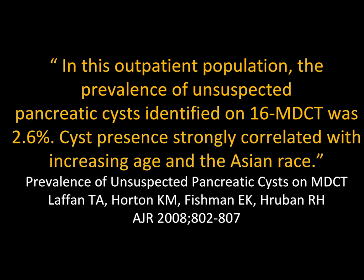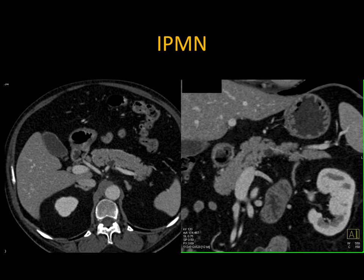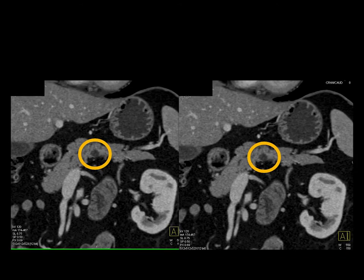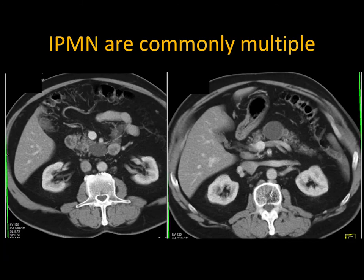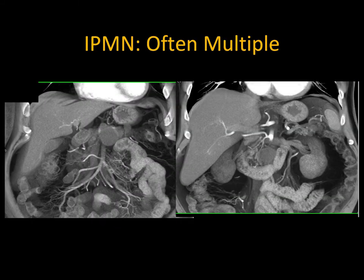Here's a typical lesion — body of the pancreas, 1cm, water density, IPMN. On the coronal view: no dilated pancreatic duct, no septations, no nodularity — typically going to be a benign lesion. A larger one in the body in a 40-year-old female could suggest a mucinous cystic neoplasm or MCN. IPMNs can be multiple — one in the uncinate and body — raising the question of which to follow. Remember the field effect with IPMNs: any area, even without lesions, can be at risk.